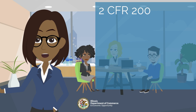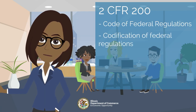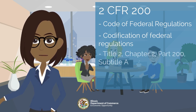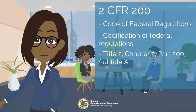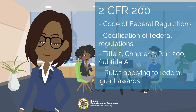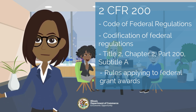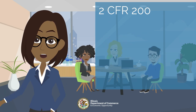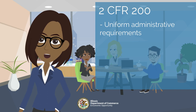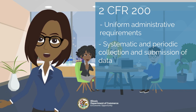CFR stands for Code of Federal Regulations, which is the codification of the general and permanent regulations established by the federal government. Chapter 2, Part 200, of Title 2, Subtitle A of CFR is the set of rules applying to all federal grant awards given to non-federal entities such as states, local governments, tribes, and non-profits. The purpose of 2CFR 200 is to establish uniform administrative requirements and provide a basis for the systematic and periodic collection and uniform submission of data to the awarding entity.